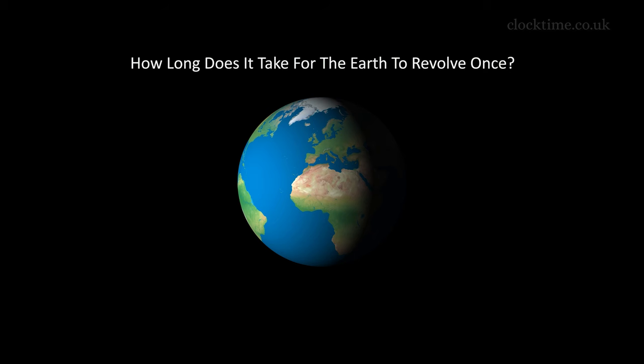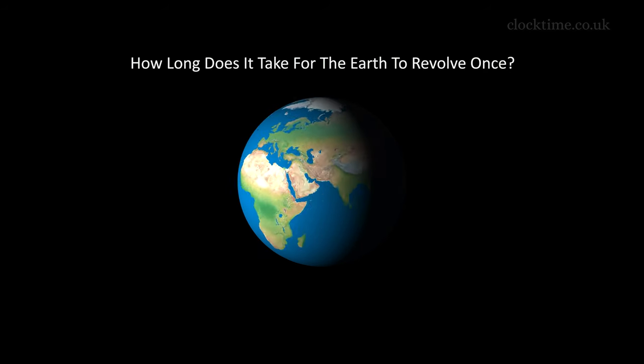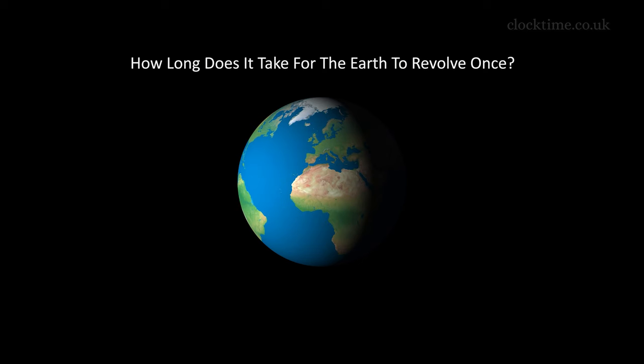Generally, everything you learn about time at school is wrong. How long does it take the Earth to make one revolution? Most people say 24 hours. But the Earth actually makes one revolution in 23 hours, 56 minutes, and 4.09 seconds.